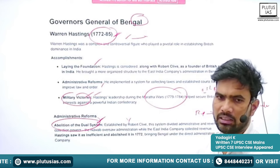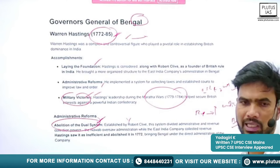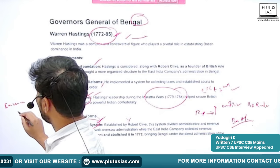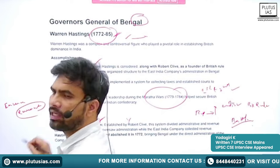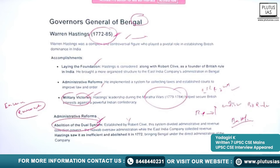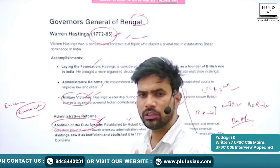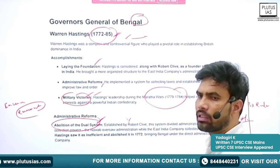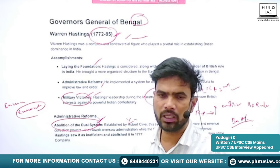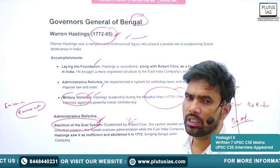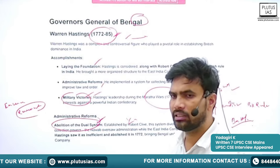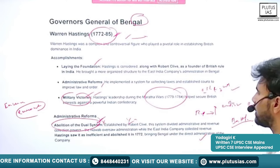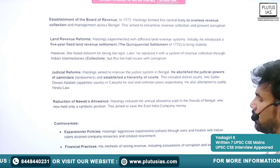Robert Clive introduced the dual system with a single motive: to increase revenues for the company. Warren Hastings realized the problem — the entire tax collection was taken by the British, while the administration burden was left entirely to the Nawab. Warren Hastings abolished the dual system and brought Bengal under the direct administrative control of the East India Company.